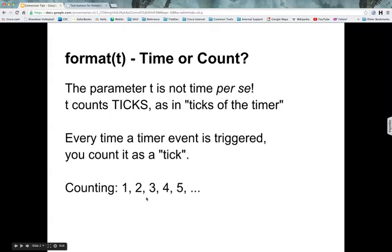So counting goes from 1, 2, 3, 4, 5. We all know how to count. It just keeps going as the timer keeps ticking. When we stop, then the counting stops. So what we have in t is actually a count, not a time.